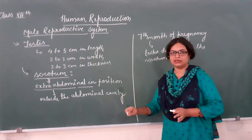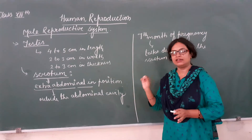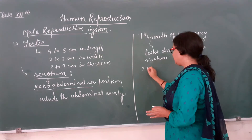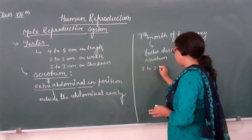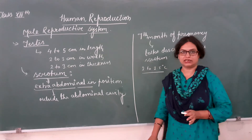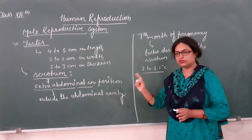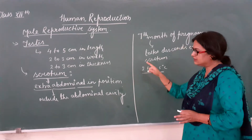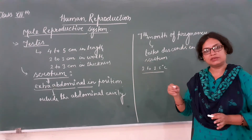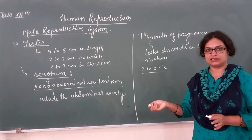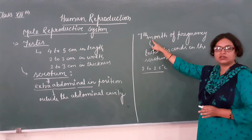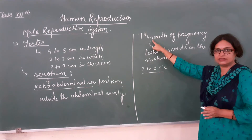The testis requires a temperature 2.5 degrees centigrade lower than the body temperature. Therefore, the testes descend into the scrotum for the process of spermatogenesis, and this descent occurs during the 7th month of pregnancy.